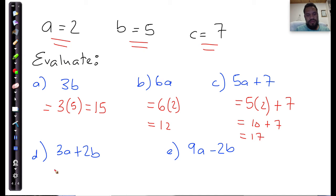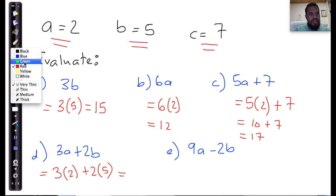3a plus 2b. So that's equal to 3 multiplied by 2, plus 2 multiplied by the value of b, which is 5. And I'm going to evaluate each of these parts.